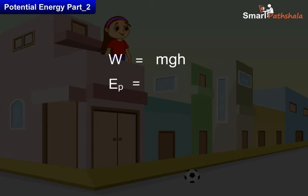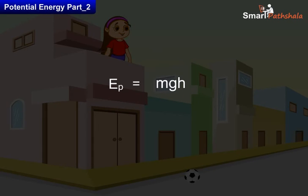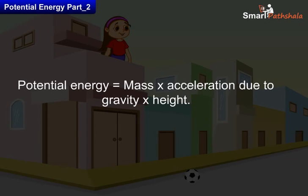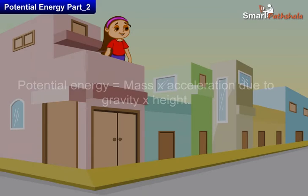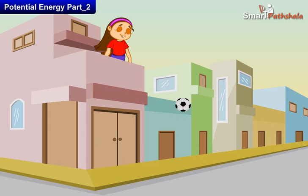The Potential Energy Ep is equal to the work done on the object. Substituting the value of work done, we get Potential Energy is equal to mass into acceleration due to gravity into height, i.e., Ep = MgH. The Potential Energy of an object depends upon the mass and height position of the object, and not upon the path.